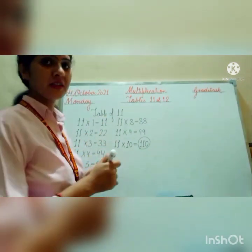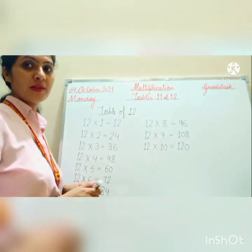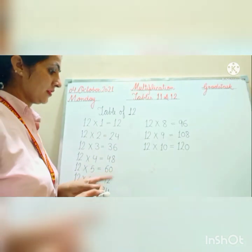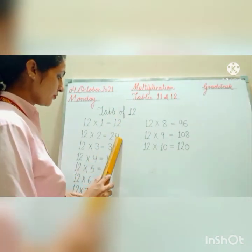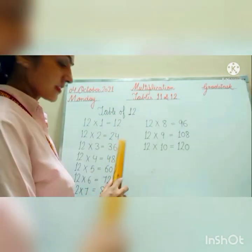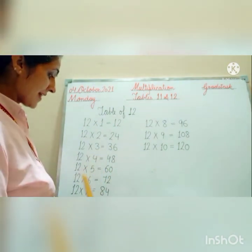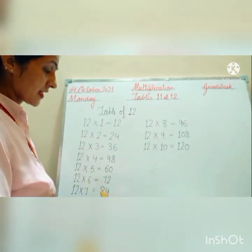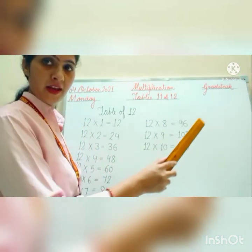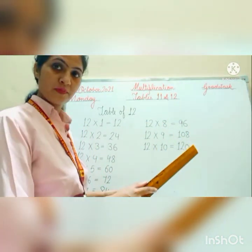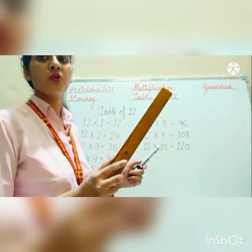Now we will start with the table of 12. Again speak with me. 12 ones are 12, 12 twos are 24, 12 threes are 36, 12 fours are 48, 12 fives are 60, 12 sixes are 72, 12 sevens are 84, 12 eights are 96, 12 nines are 108, and 12 tens are 120. So these two tables you have to write in your notebook in good handwriting.